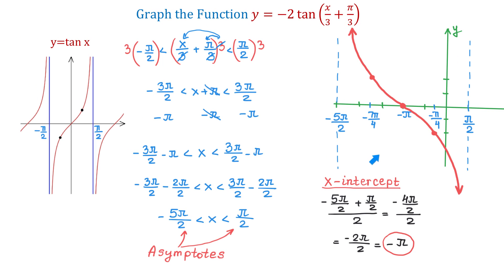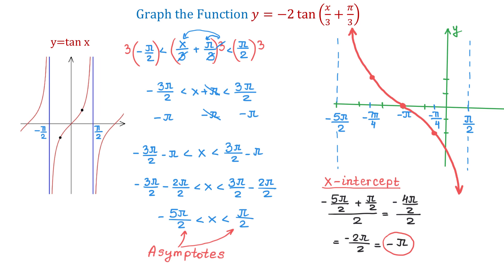Let's compare our graph to the graph of the basic tangent function. The basic tangent increases over the interval between two consecutive asymptotes. Our function, however, decreases as we move from left to right. This is because of the negative number in front of the tangent, which causes the graph to be reflected about the x-axis. So now we have the graph of y equals negative 2 tangent of x over 3 plus pi over 3, over one period.